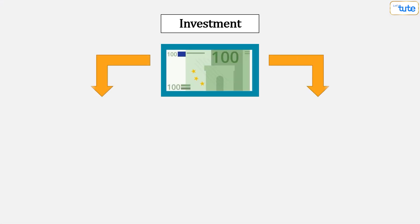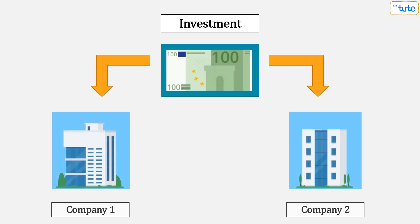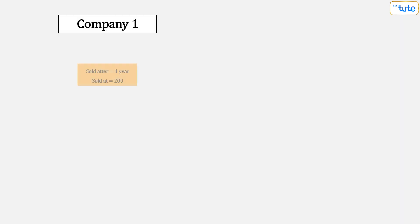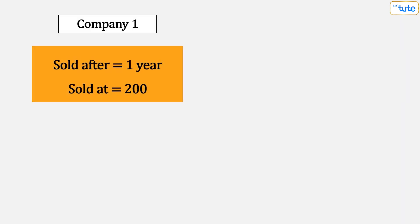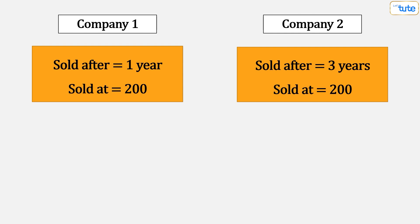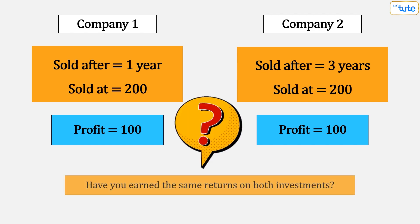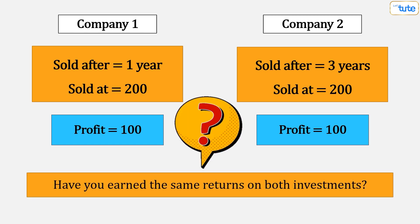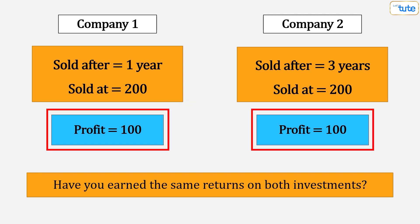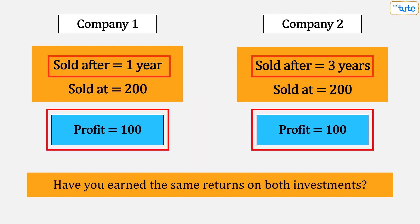Suppose you have made an investment of 100 each in two companies. The first one you sold it off after one year at 200. And the second one also you sold it off at 200 but after three years. So the profits earned on both is 100 each. Now can you say you have earned the same returns on both the investments? Maybe yes, if we see the profit amounts. But what about the years of holding the investments? That should also be considered, right?